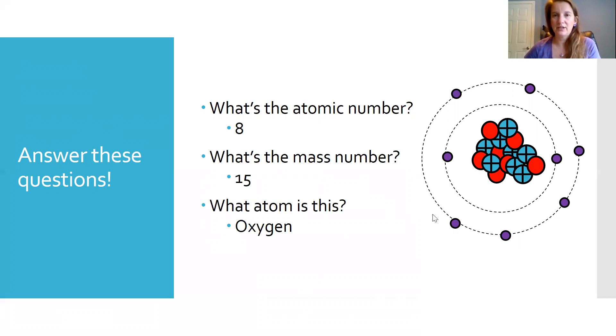Now here's an important thing to note. If you look at your periodic table for oxygen, the number underneath the symbol is 16.00. That is not the mass number. See how this mass number is 15? This is talking about this particular atom of oxygen. This is talking about all of the oxygen atoms together, the one that's on the periodic table.